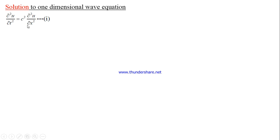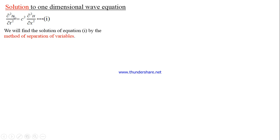We will solve this equation by the method of separation of variables. The method says: since u is the dependent variable depending on x and t, we will assume that the solution of this differential equation will be in the form of capital X of x multiplied by capital T of t — a pure function of x multiplied by a pure function of t.